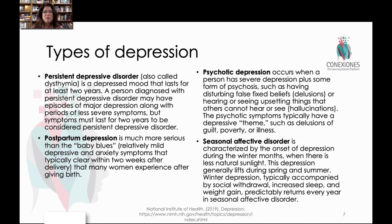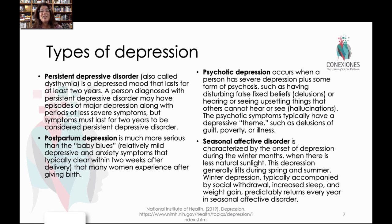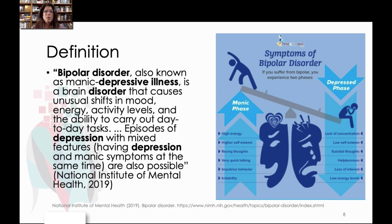We have persistent depressive disorder, also known as dysthymia — a depressive mood that lasts for years. Other types include postpartum depression, which is very serious, much more than just the baby blues, and is caused by a change in hormones, typically presenting about two weeks after delivery. Psychotic depression is a severe form that also includes psychosis, such as delusions or hallucinations. Seasonal affective disorder is related to the changing of the seasons and lack of sunlight. There's also bipolar disorder, a manic depressive illness with both phases of depression and hyper or positive manic behavior.